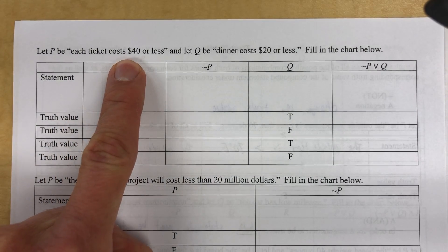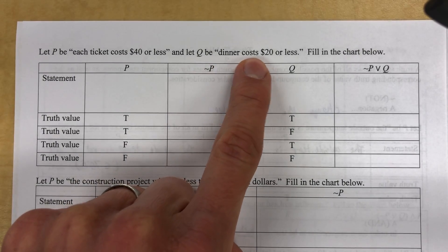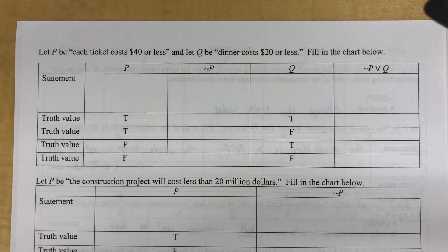So let's move on. Let P be each ticket costs $40 or less. By the way, this is how you plan a date. And Q be dinner costs $20 or less. And then we're going to go from there. So let's fill in the chart.